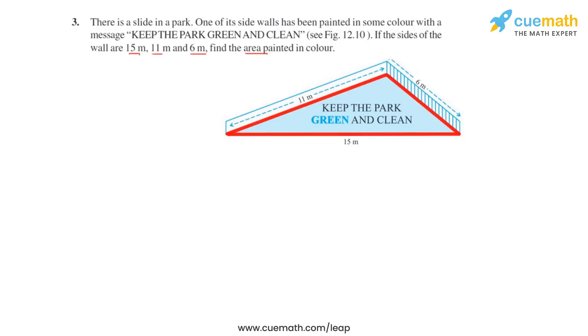As we may observe that the area to be painted in color is a triangle, we may use Heron's formula to find the required area.